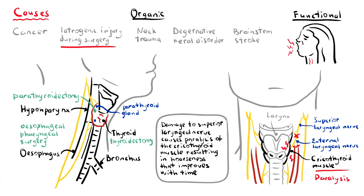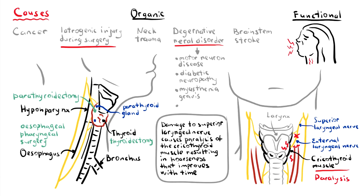Bilateral vocal cord paralysis, either incomplete or complete, is also seen in many neurological disorders such as motor neuron disease, diabetic neuropathy, myasthenia gravis, and strokes.